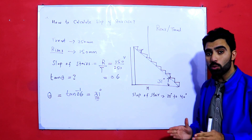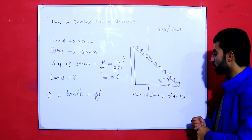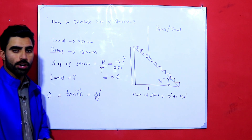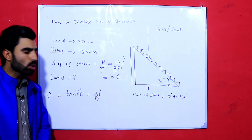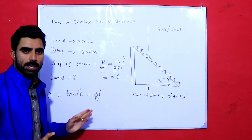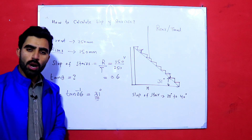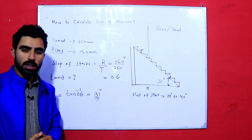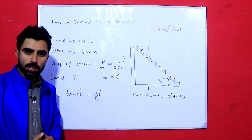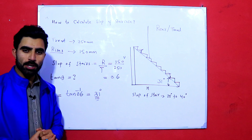So 31 degrees means this is a suitable staircase to use for a hospital, building, house, or any type of building, because the angle of staircase should be between 25 to 40 degrees. Therefore 31 degrees is the suitable slope angle for an RCC staircase structure. I hope your concept is clear. If you have any questions, comment below. You can also search my channel for other videos on RCC staircase. Thanks for watching — see you in the next video, goodbye.